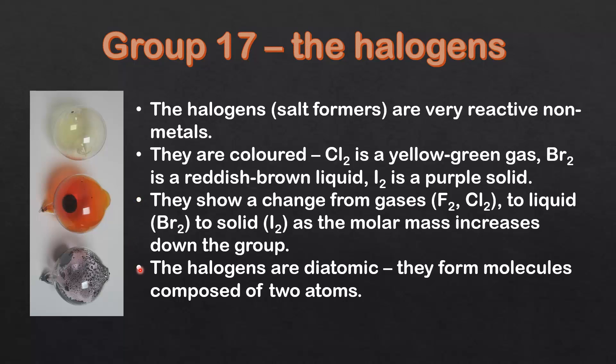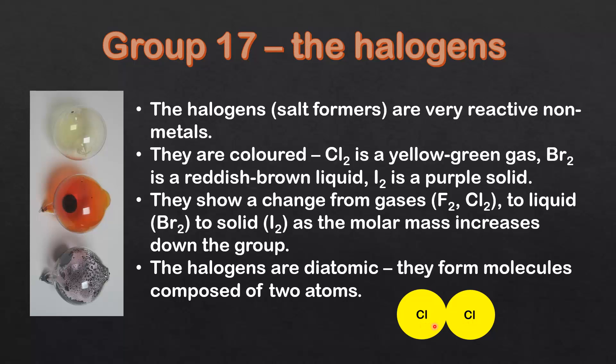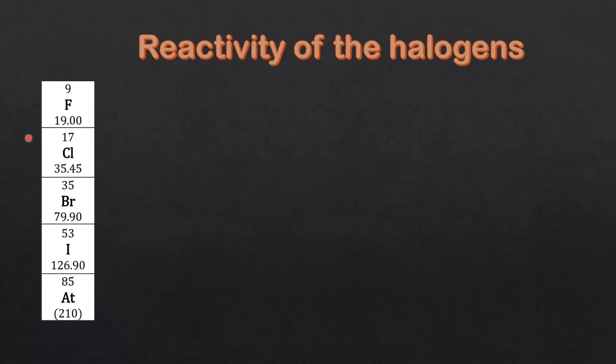The halogens are diatomic — they form molecules composed of two atoms. Here we have a molecule of chlorine; as you can see, it's formed from two atoms of chlorine joined by a covalent bond.